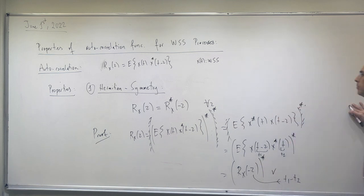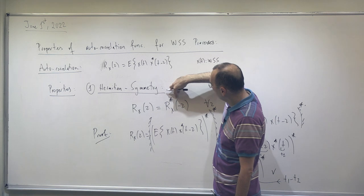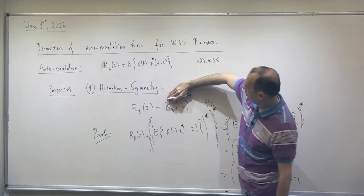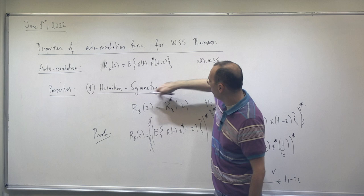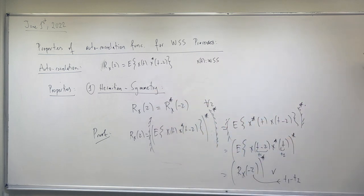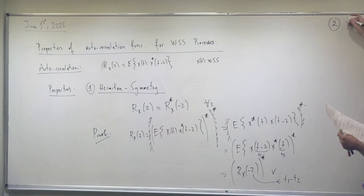For real-valued autocorrelation functions, since there is no conjugate, they should be even functions. This is the reason that in signal processing courses you study even functions, odd functions, Fourier transforms of even functions, and so on.